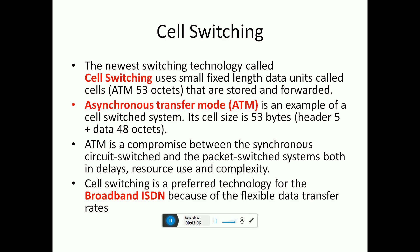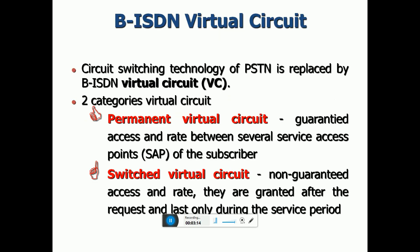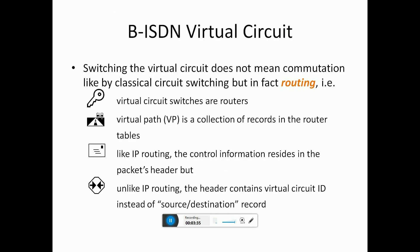ATM is compared between synchronous circuits and broadband ISDN. B-ISDN uses virtual circuits: Permanent Virtual Circuits (PVC), which provide guaranteed access and guaranteed rate between service access points, and Switched Virtual Circuits (SVC), which provide non-guaranteed access with rate guaranteed only after request and lost during the service period.